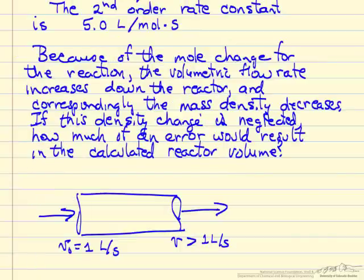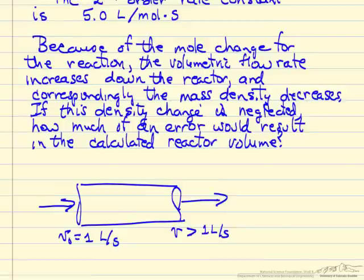Because we have this mole change, the volumetric flow rate is going to increase as we move down the reactor. So if we have 1 liter per second at the inlet, we're going to have significantly more than 1 liter per second at the outlet, and so the mass density is going to decrease. But since the mass flow rate is the same, the volumetric flow rate is increasing.